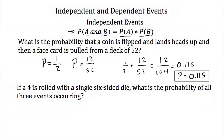Let's look at another example. If a 4 is rolled with a single 6-sided die, what's the probability of all 3 events occurring? First, we're going to flip a coin and it's going to land heads up — the probability of that is 1 out of 2. Then we're going to pull a face card from a deck of 52 — the probability of that is 12 out of 52.